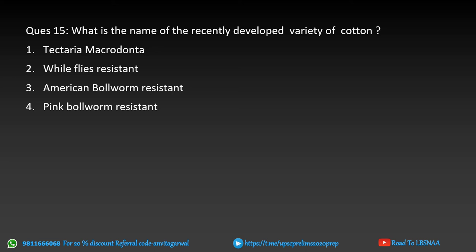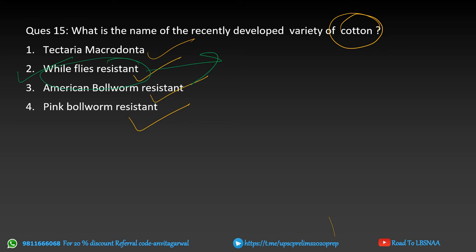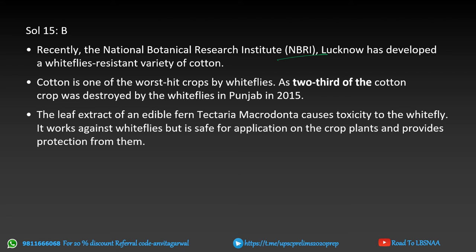Next — a recently developed variety of cotton. This involves biofortified or genetically modified crops. Please consolidate your notes on any biofortified or GM crops you have studied, including the crop name — they can be asked in matching questions. The new recently developed cotton variety is white flies resistant. The correct choice is option B. NBRI — National Botanical Research Institute, Lucknow — has developed a white flies resistant variety of cotton. Cotton is the crop most affected by white flies; two-thirds of Punjab's cotton crop was destroyed in 2015 due to white flies.